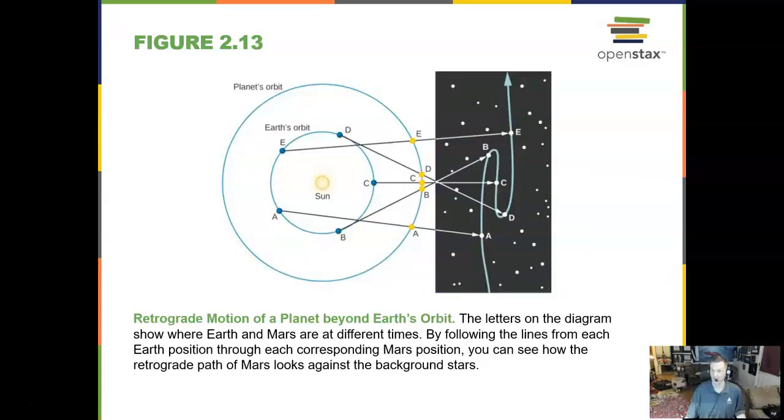We can describe a backwards motion in the sky and backwards motions are called retrograde motions. And so this is an example of a planet moving backwards in the sky. And the planet Mars is our best example of a planet that does this.